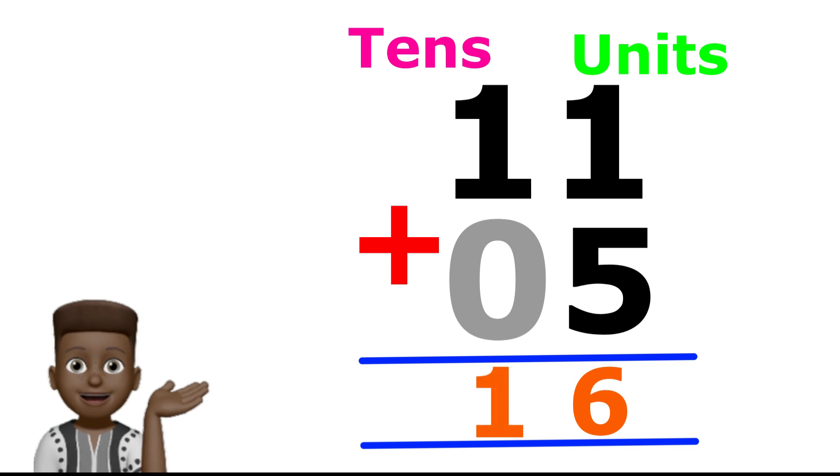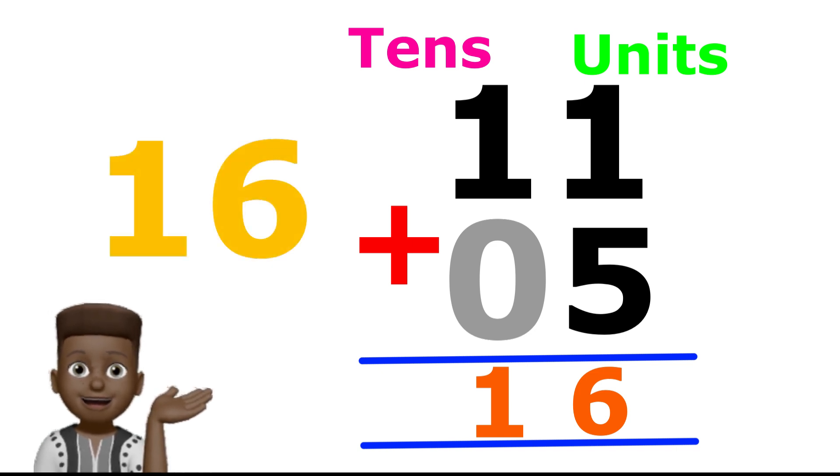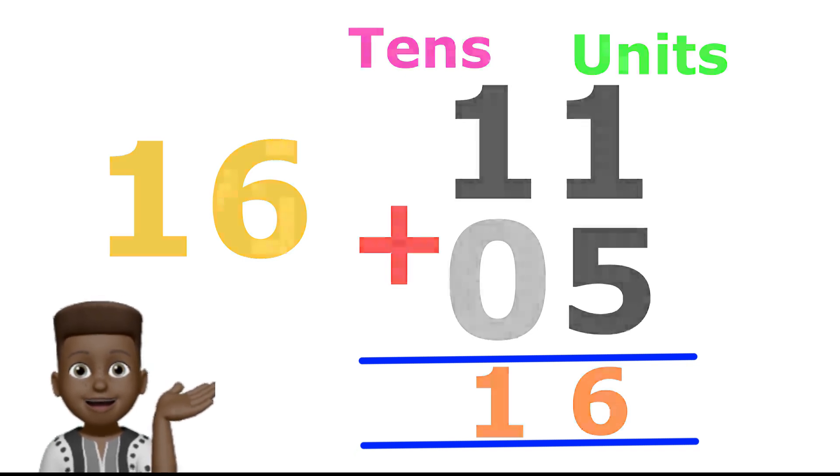And so, one and six equals sixteen. Therefore, using our block form, eleven plus five equals sixteen. Let's try one more by ourselves before we say goodbye.